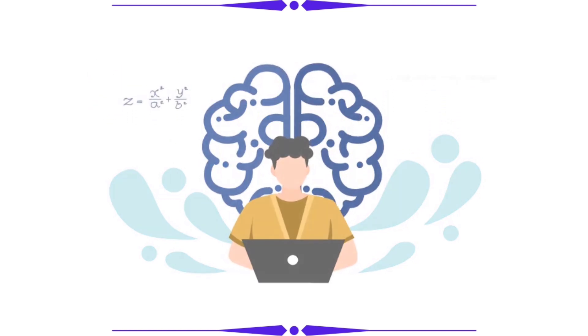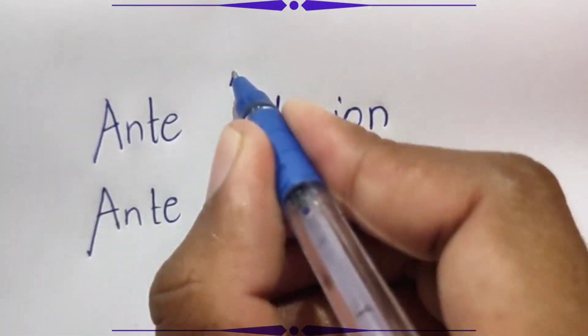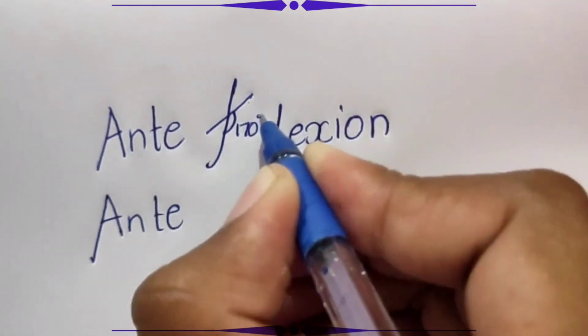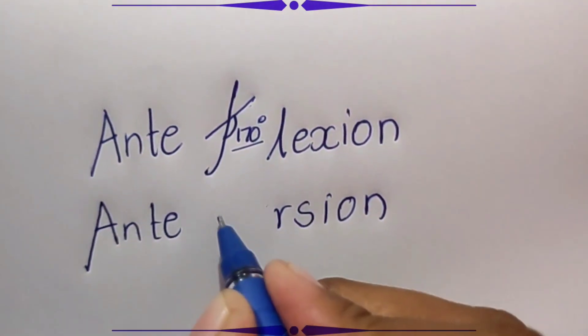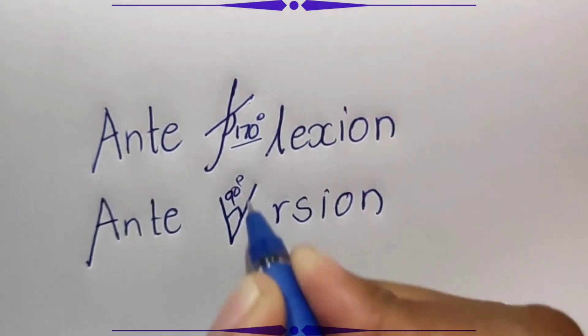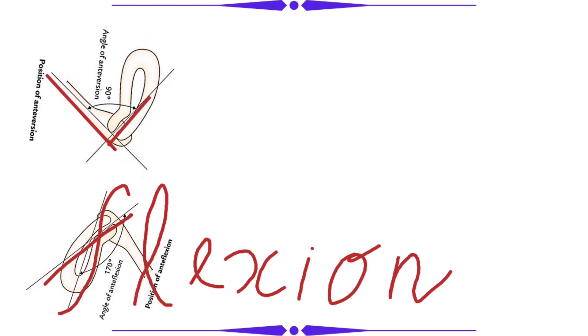How to remember these two angles — just observe how I am writing 'anteflexion' and 'anteversion.' I know you may feel it is a bit silly, but observe another modification of the figure I am showing on the screen. From their names, we can easily extract their angles. It's very easy and simple.